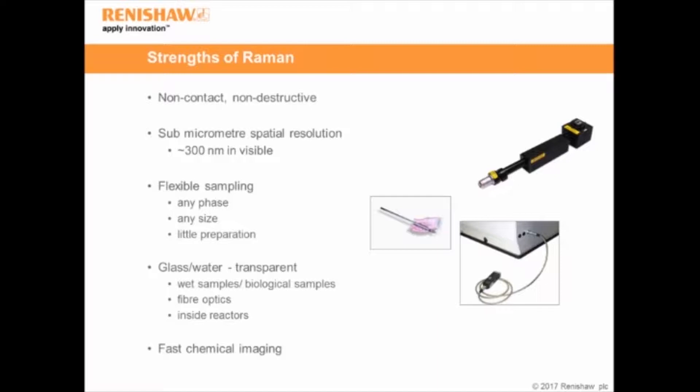We can use fibre optics, so we can actually measure samples a long way from the Raman spectrometer just by using a fibre optic probe. We can also measure through reactor windows — so if we had a sample in a reactor at 2,000 degrees, we can just shine our laser light through the reactor window and measure the sample inside.